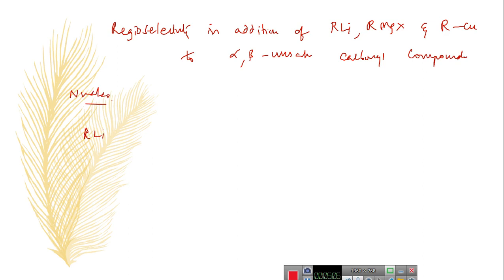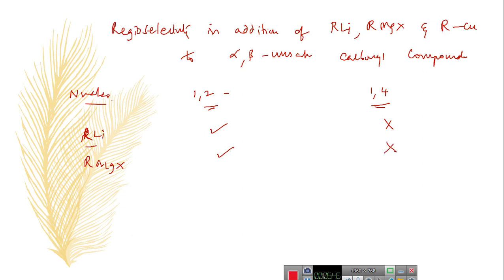For example, the nucleophile RLi, that is organolithium. Since lithium has a high percentage of ionic character, the attached organyl group acts as a strong nucleophile, so it always prefers 1,2 addition in alpha, beta unsaturated carbonyl compounds. Similarly, organomagnesium halide also prefers 1,2 addition over 1,4 addition, since it is also connected to a metal with a high percentage of ionic character.